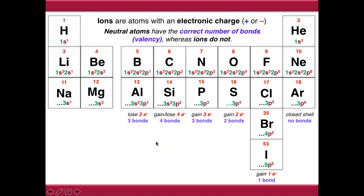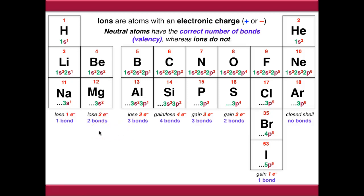As we move to the left of carbon in the periodic table, we'll find that elements want to lose electrons. Boron and aluminium want to lose three electrons because that's the simplest way to get to a closed shell. The alkaline earth metals will want to lose two electrons and the alkaline metals will want to lose one electron.